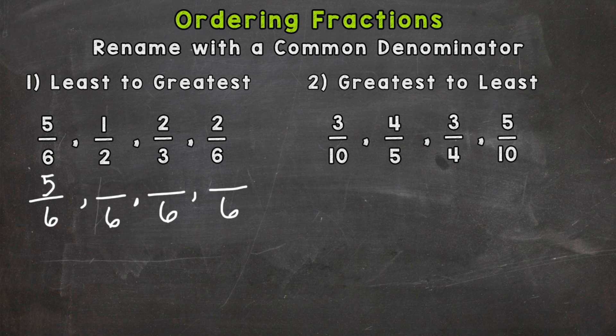Now 1 half, well I know 2 times 3 will give me the denominator of 6. So I need to do the same thing to the top in order to rename that fraction. So 1 times 3 is 3. 3 times 2 gives me the denominator of 6. So I need to do the same thing to the top in order to rename that fraction.